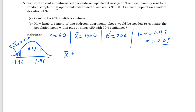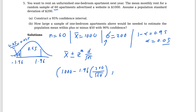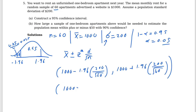We know everything, so we can find the confidence interval. Since sigma is known, the formula is x-bar plus or minus z-star times sigma over root n. x-bar is 1,000, z-star is 1.96, sigma is 200, and n is 60. Computing: 1.96 times 200 divided by the square root of 60 gives approximately 50.61.